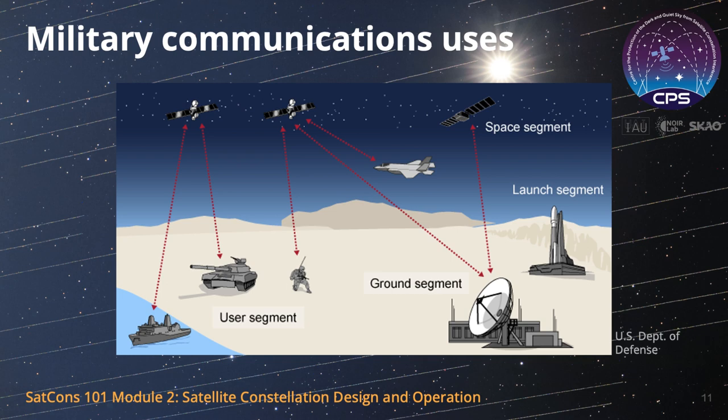Militaries are also very interested in their own large constellations. Some have indicated their desire to launch and operate their own systems, while others are content to buy access from commercial space operators. Satellite constellations offer quick and secure communications with troops in the field. Proprietary GPS systems offer extremely reliable position information, and small constellations can help guide weapon systems to reach their targets while minimizing collateral damage.